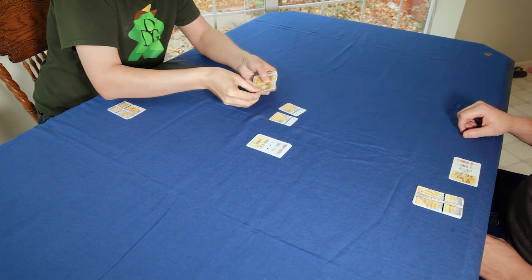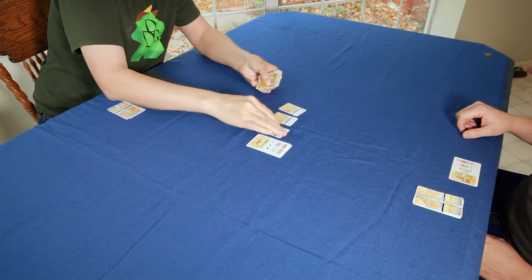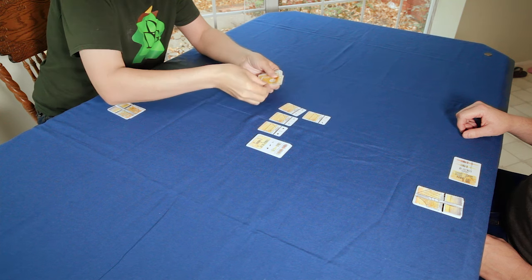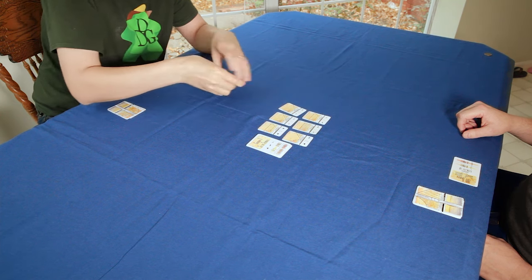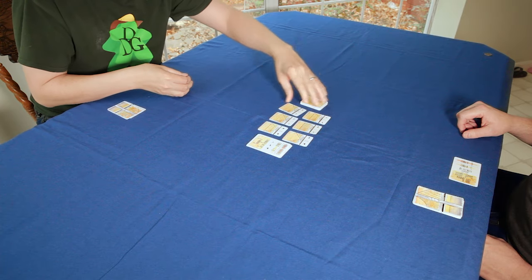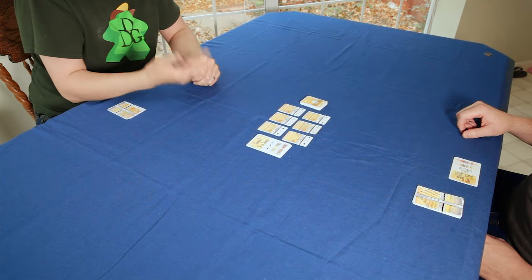The players set up the game and play again. Before starting play on the next game, the losing player from the previous game looks at the next contract and face-up bridge cards, then decides if they want to go first or second. The first player to win two contracts wins the game.